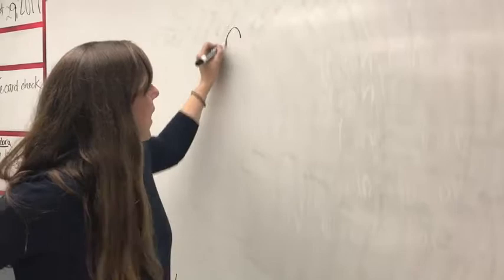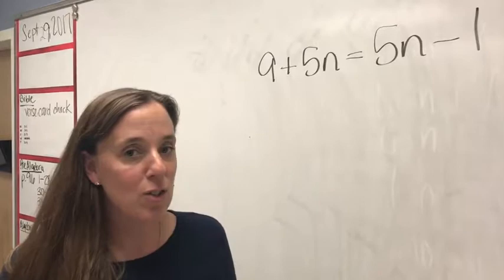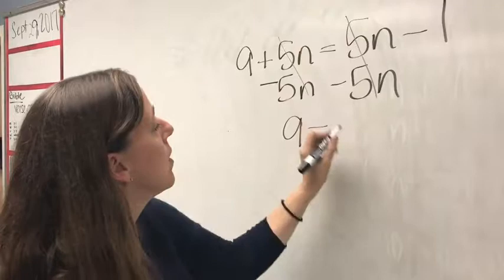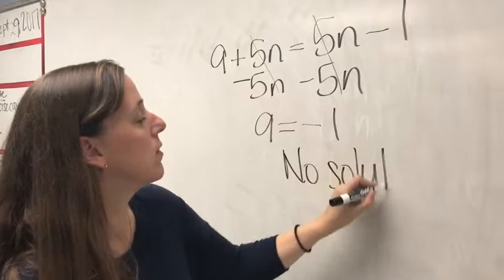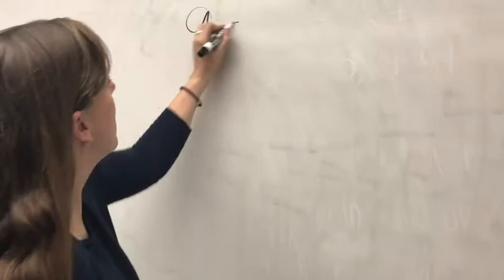How about 9 plus 5n equals 5n minus 1? Subtract 5n from both sides and you get 9 equals negative 1. Since 9 does not equal negative 1, this has no solution.